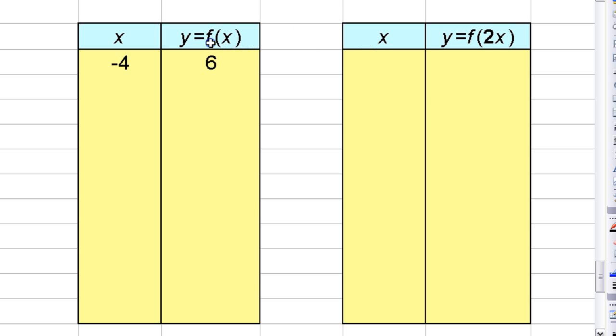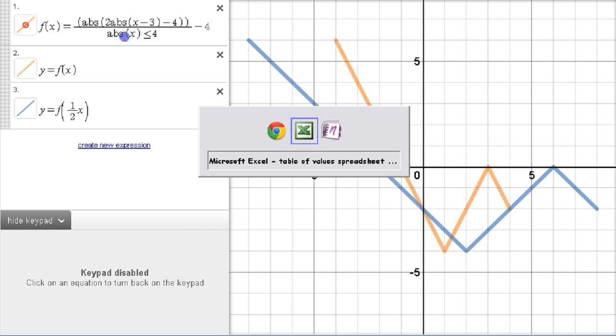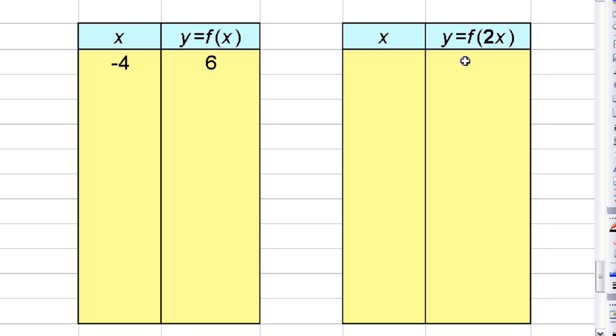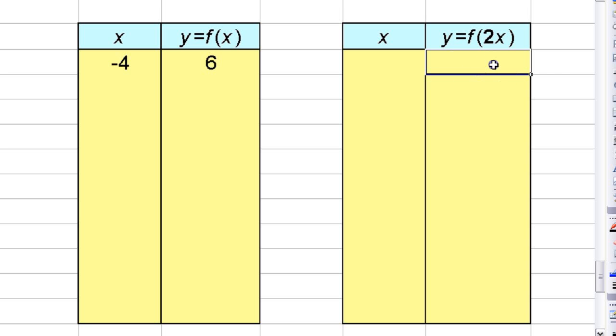So this is a table where we're changing f of x to f of 2x. This function, this f, represented all those crazy operations. If I want to get this same y value here, if I want to end up with a 6 here, I want to end up with that same y value because if we look at the picture, the y values haven't changed. But if I want to end up with this same y value here, and the first thing I'm going to do before I apply that function is multiply the x value by 2, I've got to start with something that's half as big here.